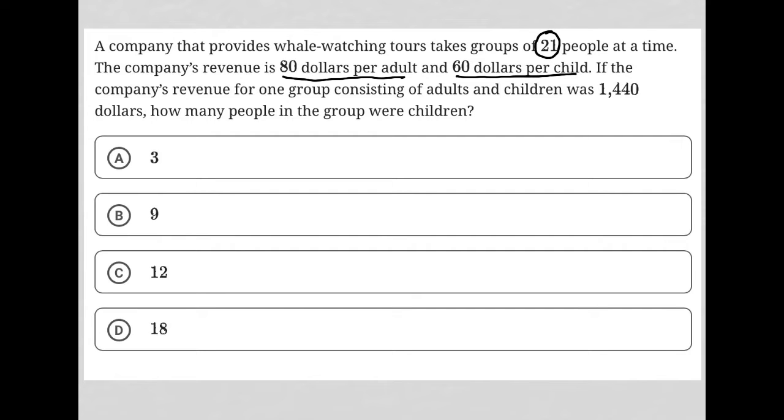If the company's revenue for one group consisting of adults and children was $1,440, let's think about that. $80 per adult, I'm going to say 80 times A, with A representing the number of adults, plus $60 per child, so 60 times C with C representing the number of children. When you add all that together, you're going to make $1,440.